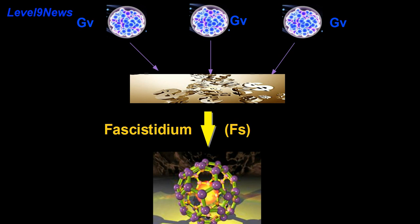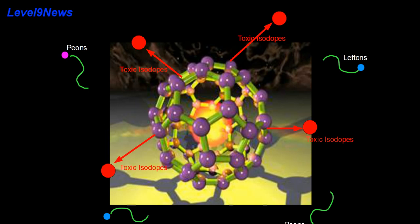Vast sums of money are consumed in exchange yet no other byproducts are produced. One notable characteristic of fascidium is that it will no longer react with lepton-like particles or peons which it consumes in its creation and exponentially creates more toxic isotopes which poison everything it comes into contact with.